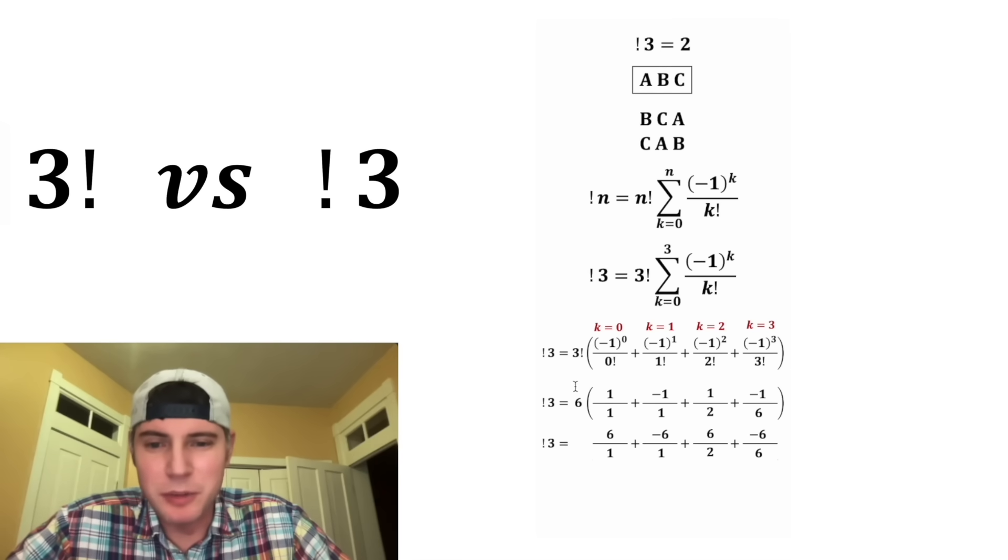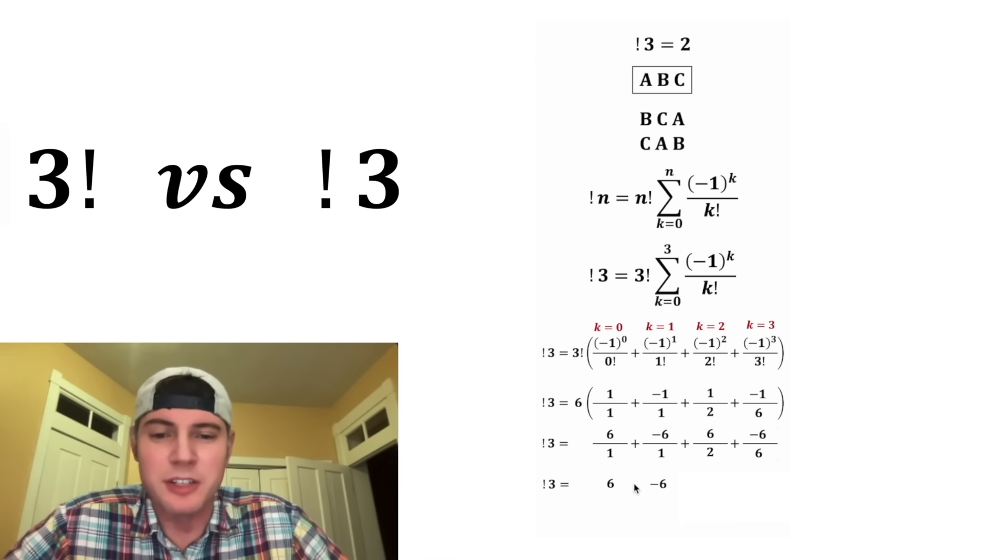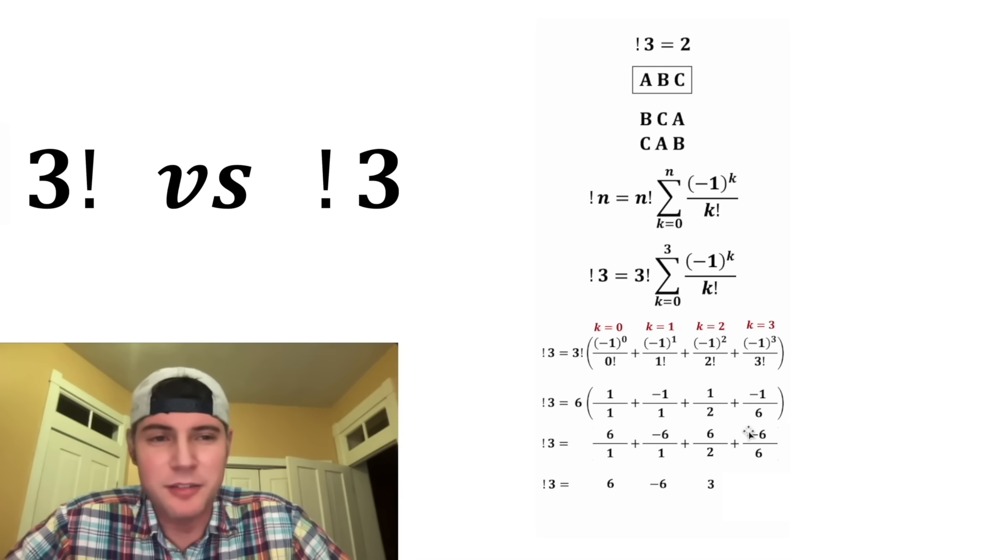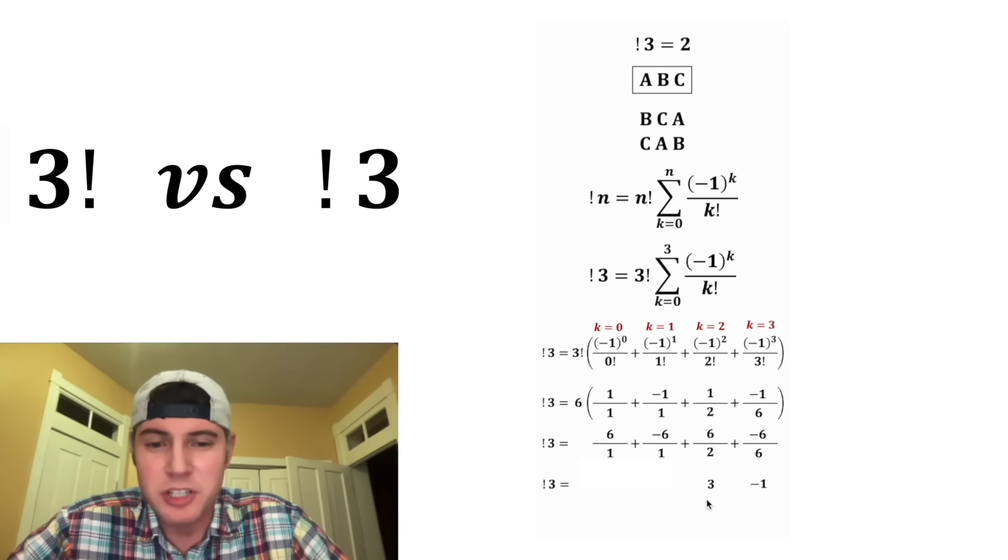And then for the next step, let's distribute the 6 to all four terms. So we're just going to have 6 on top. Positive 6 divided by 1 is 6. Negative 6 divided by 1 is negative 6. Positive 6 divided by 2 is positive 3. And negative 6 divided by 6 is negative 1. And 6 plus negative 6 cancel each other out. So we just have 3 minus 1, which is equal to 2.